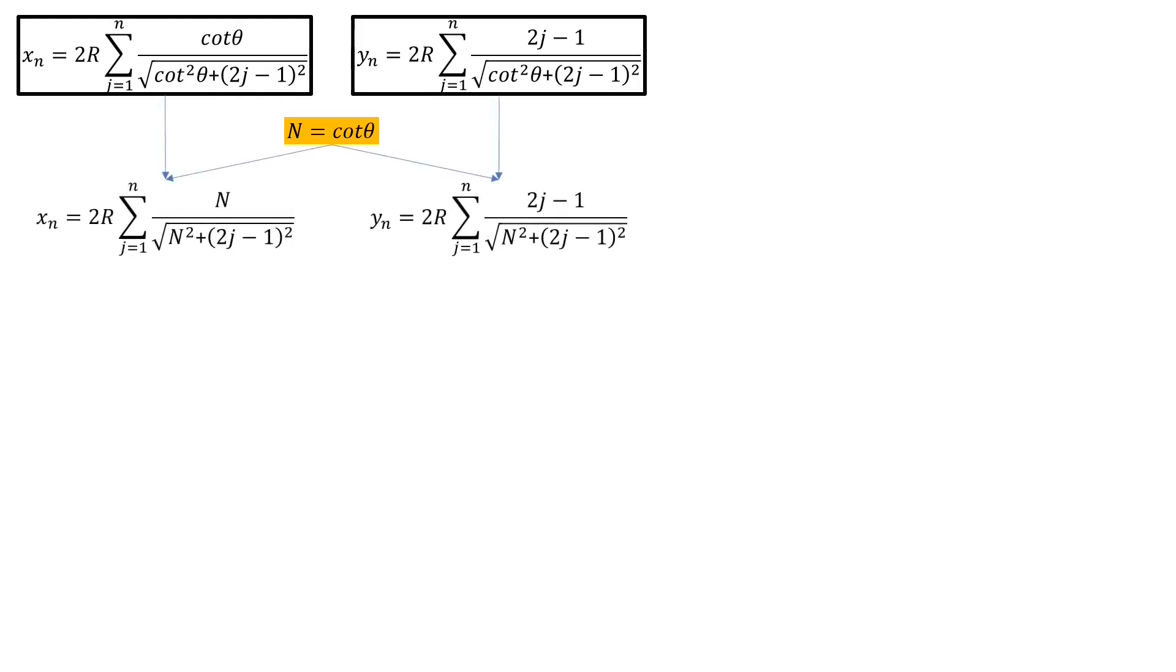And now consider a change to index k equals 2j minus 1, which will simplify the form of the summand. Written in terms of this new index, our 2x and y sums are, which changes the upper and lower limits of the sums accordingly. And that's much nicer.